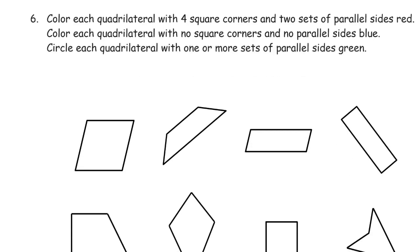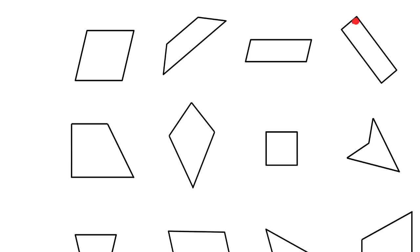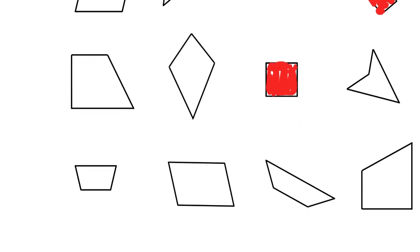Color each quadrilateral with four square corners and two sets of parallel sides red. Here's a trick: if it has four square corners, it has to have two sets of parallel sides, so for the red ones you're just looking for four square corners. This one here has four square corners, so I'm going to color that red. This square definitely has four square corners, so I'll color it red too. I don't see any other shapes with four square corners, so that one's done.